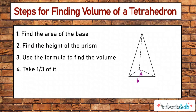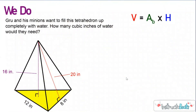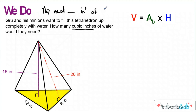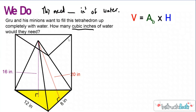Let's take a look at a we-do problem. Gru and his minions want to fill this tetrahedron up completely with water. How many cubic inches of water would they need? We know that asking for cubic inches of water is asking for volume. So our statement would say: they need blank cubic inches of water. Step one is to figure out the area of the base triangle — let me highlight it in green. Because this is a right triangle, we'll use its base and height.